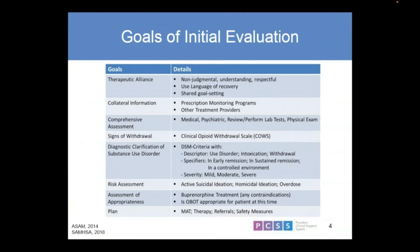Evaluating for risk — are they at potential harm for themselves or others? Are they at risk for overdosing based on past or current behaviors? Assessing whether they're an appropriate candidate for this type of treatment, and whether anything would prevent them from doing well. Is OBOT an appropriate scenario for this patient? And finally, coming up with a plan — is it going to be MAT, just therapy, referrals? Having the plan communicated to the patient is important.